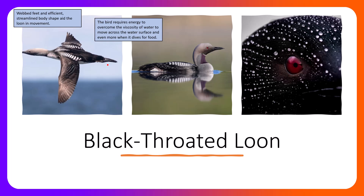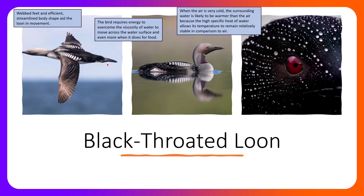The bird requires energy to overcome the viscosity of water to move across the water surface, and even more when it dives for food. This specific bird can dive underwater in search of fish and other food items, and they have to be streamlined and aerodynamic, which allows them to expend less energy moving through the viscosity of the medium. When the air is very cold, the surrounding water is likely to be warmer than the air because the high specific heat of water allows its temperature to remain relatively stable. If the temperature of the air is at 32°F or lower, the water is likely higher than 32°F — otherwise the water would be frozen. So the air might be 30°F but the water might actually be 38°F, meaning the water is warmer for the bird.